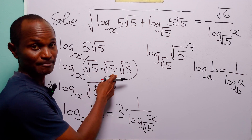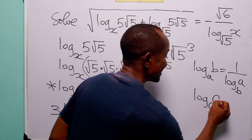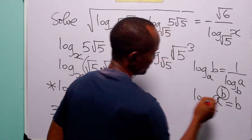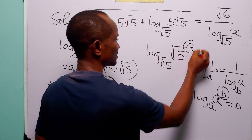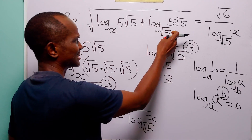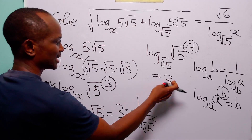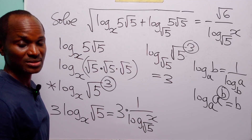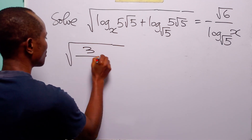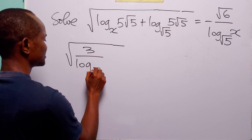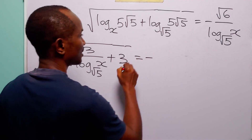Just as we have already found here. And remember that log to base a of a to the power d is equal to b. So log to base root 5 of root 5 to the power 3 is equal to 3. That means this term is equal to 3. Now let us rewrite the original equation in terms of these two simplifications. The equation is now the square root of 3 over log to base root 5 of x plus 3.